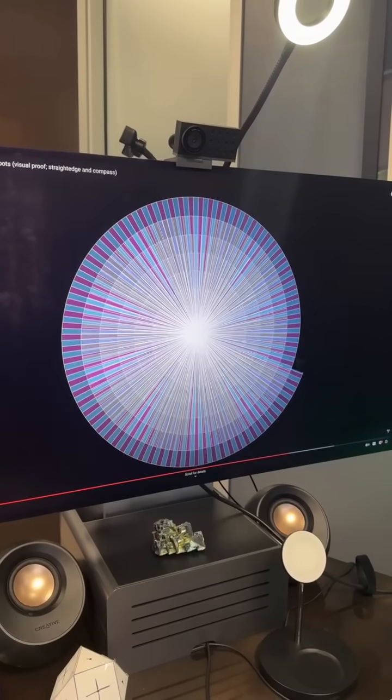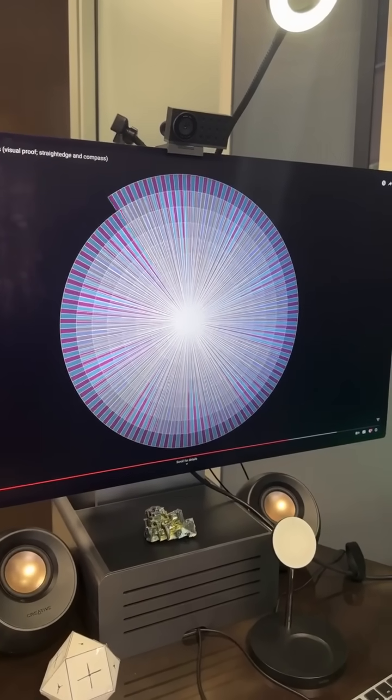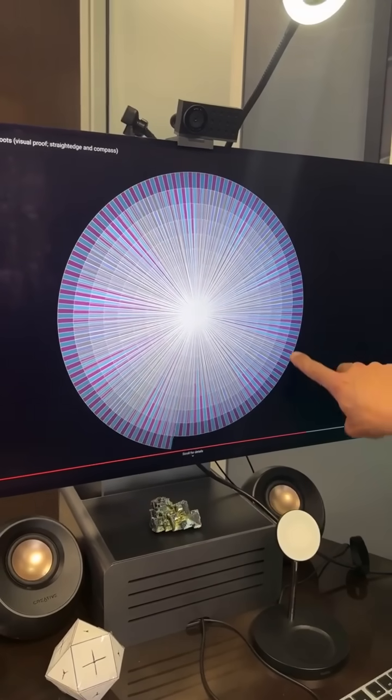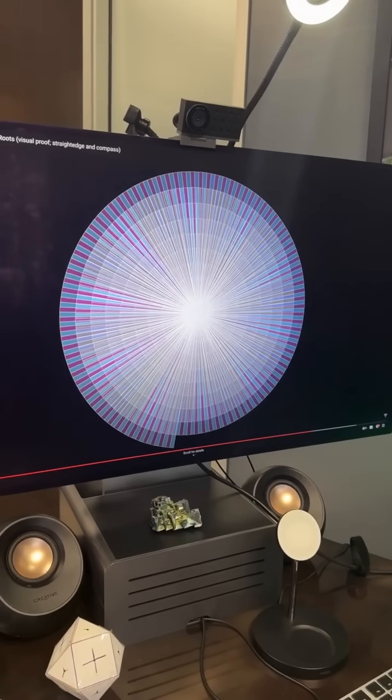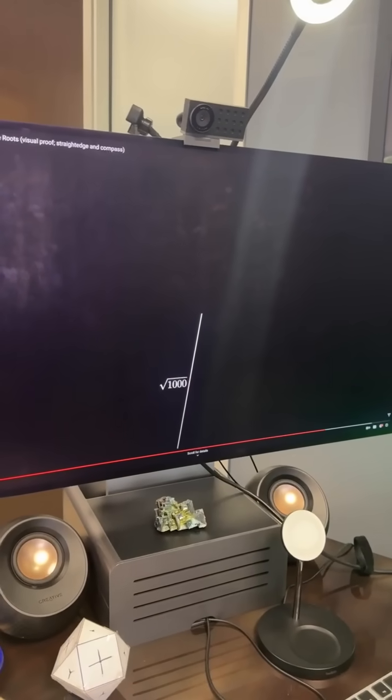And sure enough, every single number, it doesn't matter how far you go out, there's mathematical proofs on this, on the spiral of Theodorus will always be, when you keep the outer line value of 1, will always be the very next square root value, without exception. Even at 1,000,